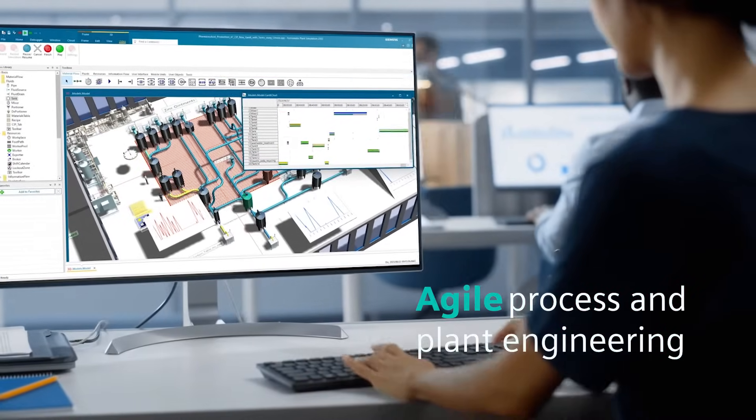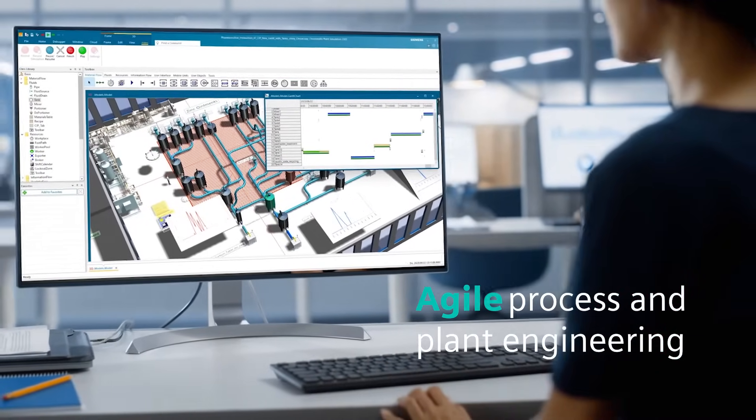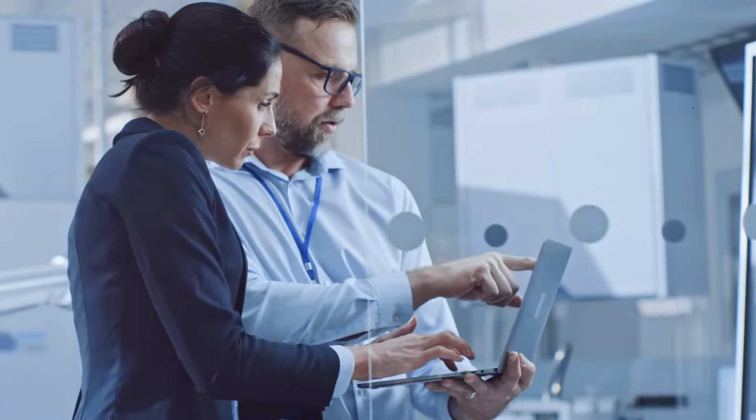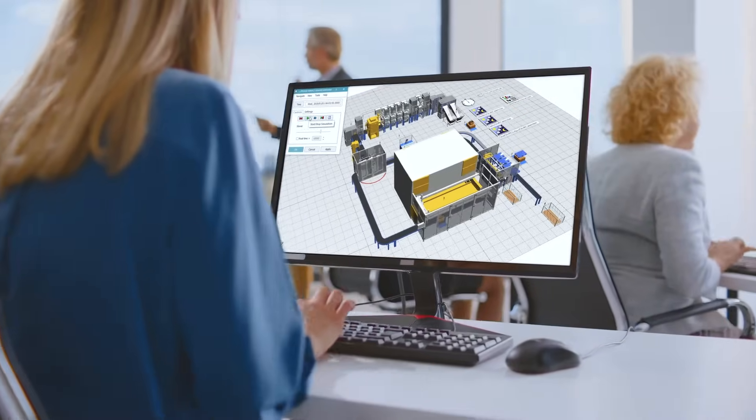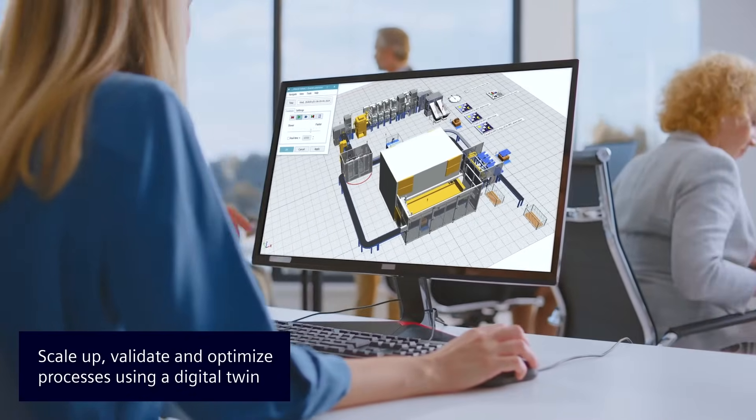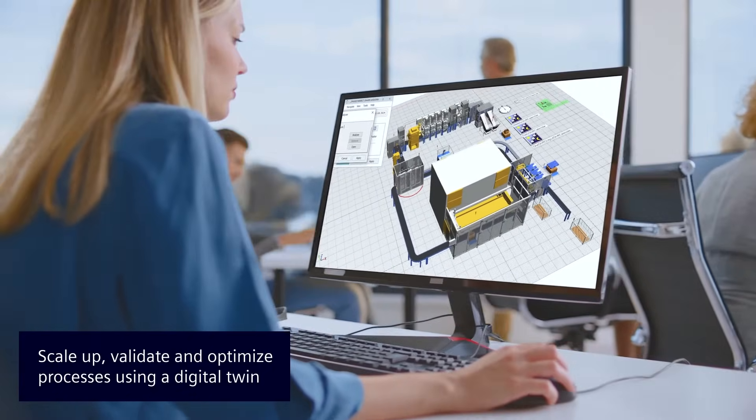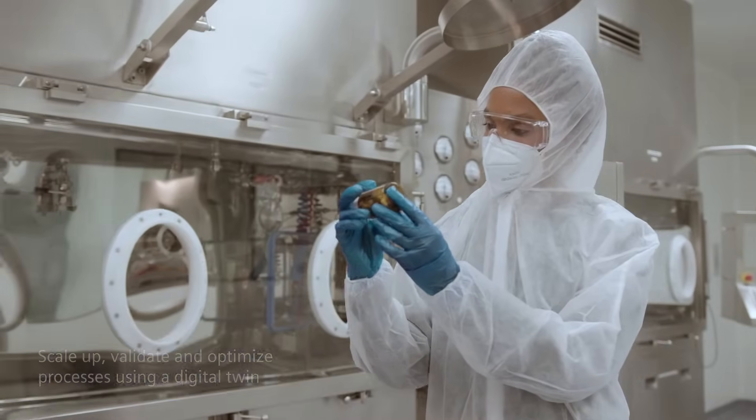First, you should adopt a more agile approach to process and plant engineering. Using a trustworthy digital copy, also known as a digital twin of your plant, you can confidently prepare to launch at scale by virtually validating your processes before actually executing them.